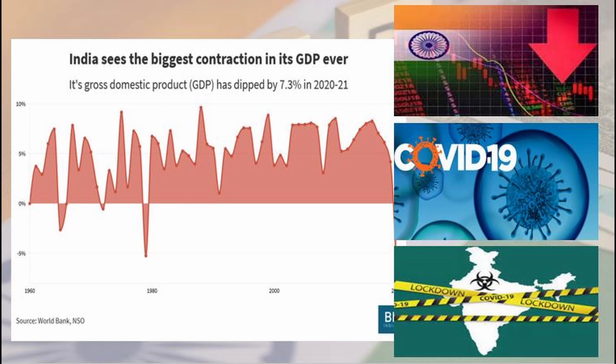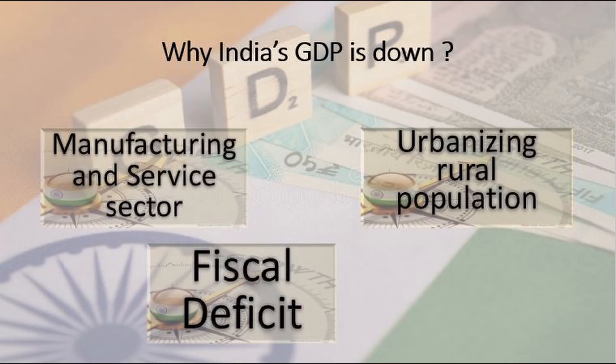Though GDP is always said to be the indicator of economic health of a nation, is it really? India is rich in resources, yet it is not counted in the top manufacturing or service sectors, which is affecting the GDP. There are various reasons why India's GDP is not growing — the first is the manufacturing and service sector, the second is urbanizing the rural population, and the third is fiscal deficit. Let's look at these one by one.